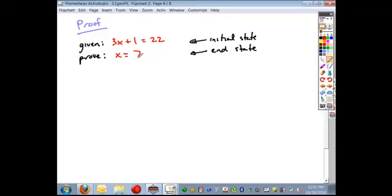So when we look at this, our initial state is always our given information. Our end state is always our conjecture. The word conjecture just means educated guess.